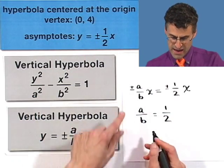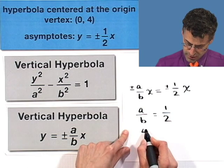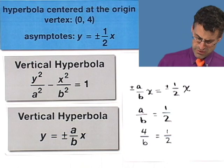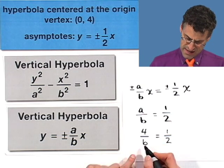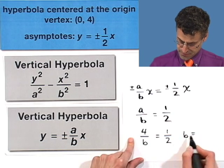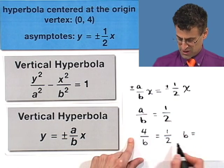so I have 4/b = 1/2. And I have to solve this, there's a million ways of doing this, you can cross multiply if you like, and that shows you that b = 8, because b times 1 equals 4 times 2, which is 8.